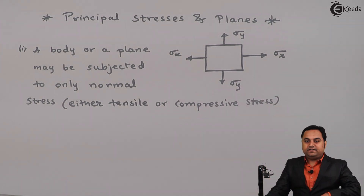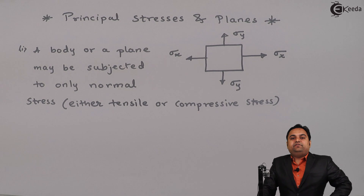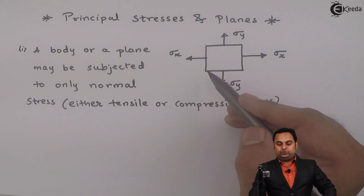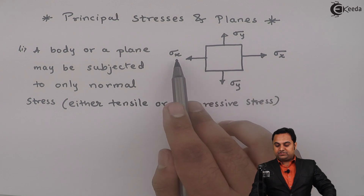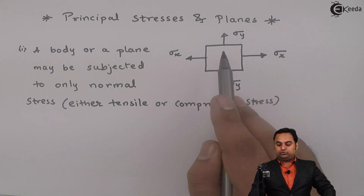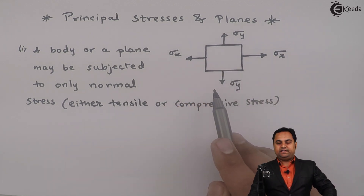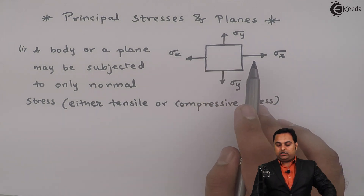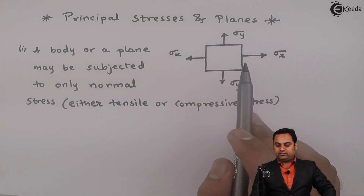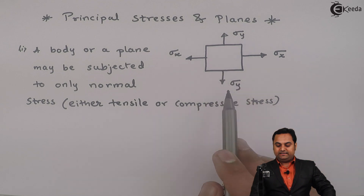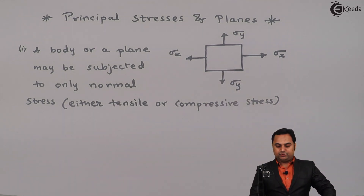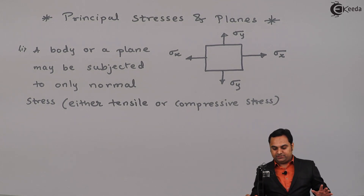So for this figure, a body or a plane may be subjected to only normal stress. Normal stress means either tensile or compressive stress. In this example, the plane is subjected to stresses along two perpendicular directions, that is along X and Y. Along X the stress is Sigma X, along Y it is Sigma Y, and they are called normal stresses.